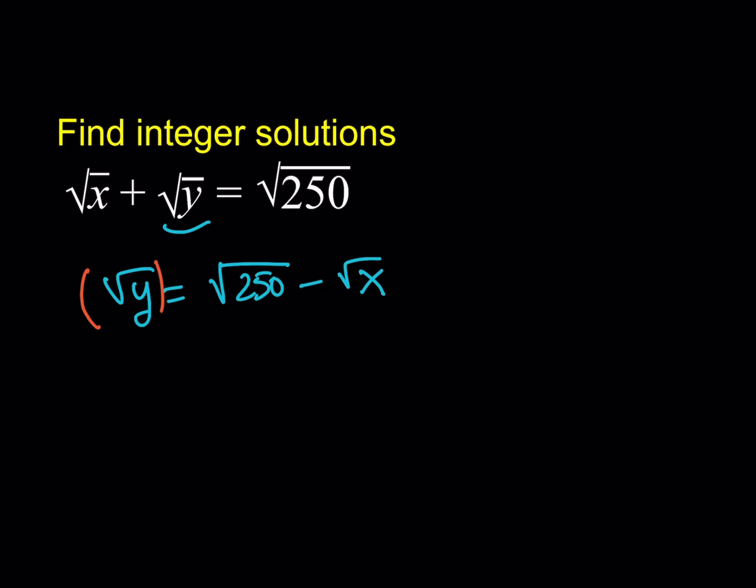If you square both sides you're going to get rid of the radical on the left hand side. It's going to be y. On the right hand side you're going to get rid of some of the radicals but you also have some radicals. So when you square the first term you're going to get 250. And then square the second one you're going to get x minus two times square root of 250 multiplied by the square root of x which you can definitely write as 250x under the radical.